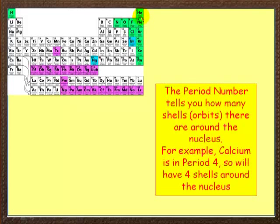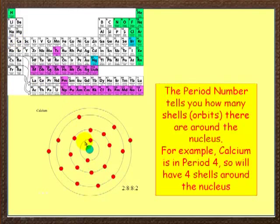Now, the period number tells you how many shells or orbits there are around a nucleus. This has got 1 orbit, 2 orbits, 3, 4, and so on. So, calcium is over here. It is in period 1, 2, 3, 4. So, it tells us that calcium has got 4 shells around the nucleus. And here it is, 1, 2, 3, 4.